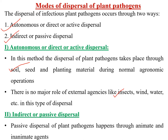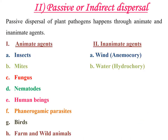In indirect or passive dispersal, plant pathogens disperse through animate and inanimate agents. Animate agents include insects, mites, fungi, nematodes, human beings, phanerogamic parasites, birds, and farm and wild animals. Inanimate agents include wind and water. Dispersal by wind is known as anemochory and dispersal by water is known as hydrochory.